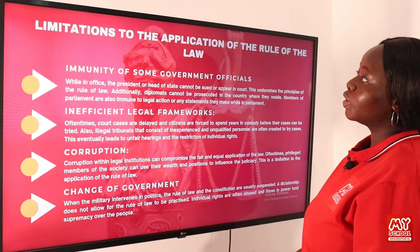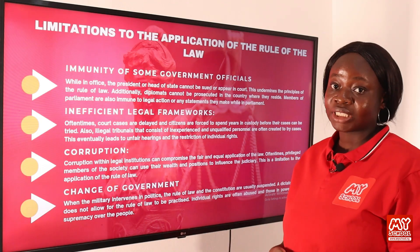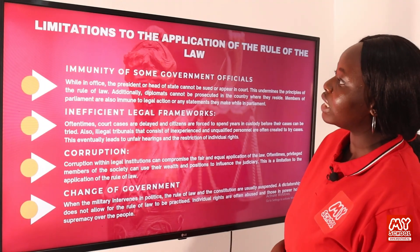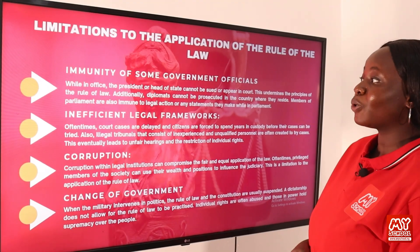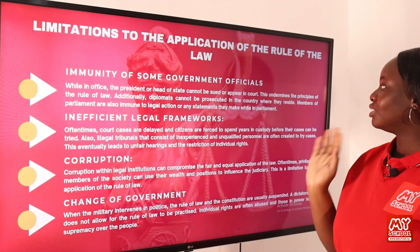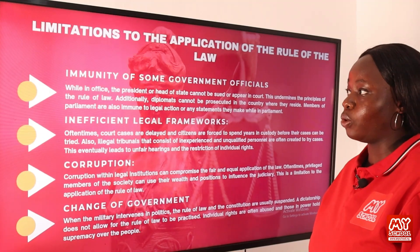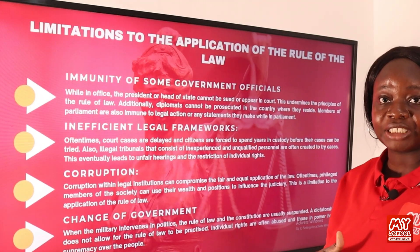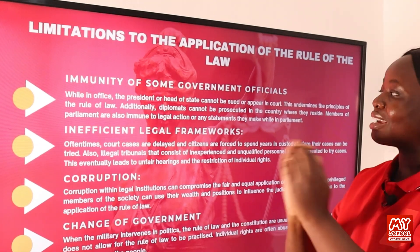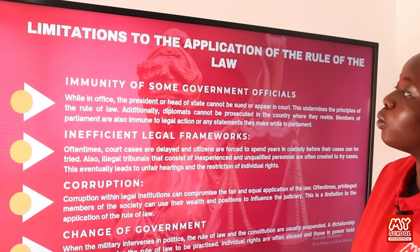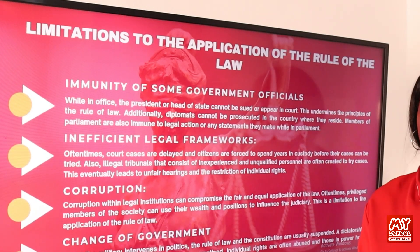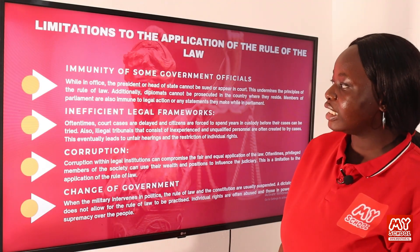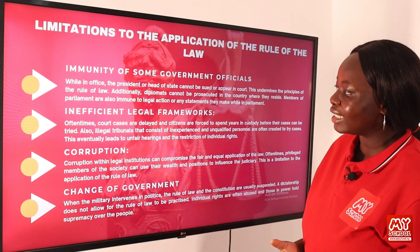Now we're going to discuss the limitations on the application of the rule of law, because certain factors can prevent this principle from being fully applied. One limitation is the immunity of some government officials: while in office, the president or head of state cannot be sued or appear in courts, which undermines the principle that everybody is equal before the law. Additionally, diplomats cannot be prosecuted in the country where they reside, even if they have committed a crime. Members of parliament are also immune to legal action for statements made while in parliament.